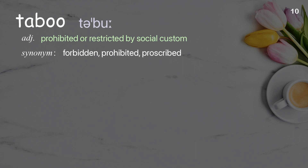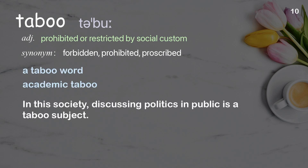Taboo: Prohibited or restricted by social custom. Examples: A taboo word. Academic taboo. In this society, discussing politics in public is a taboo subject.